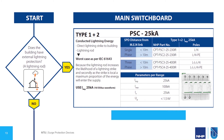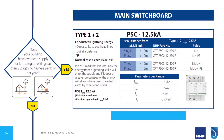If your building does not have external lightning protection, the next question is: does the building have overhead supply, or is it in a region with greater than 2.2 lightning flashes per square kilometer per year? These stats can be looked up on the Bureau of Meteorology website. If this is the case, then any lightning strike is likely to be at a greater distance, therefore less energy will be entering your installation. In this case, we can use a surge protection device with an impulse current of 12.5 kA — here, NHP has the PSC 12.5 kA. Part numbers are selected depending on whether it's three-phase or single-phase and that distance from the MEN link.